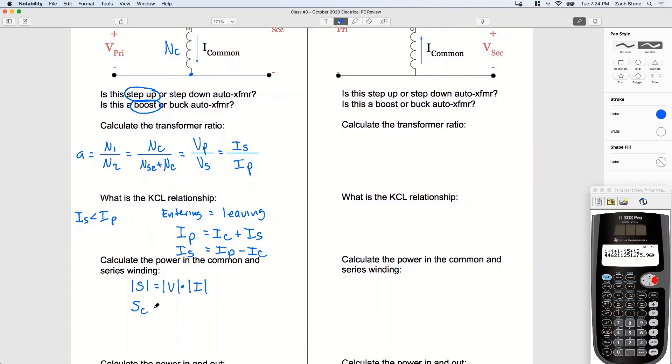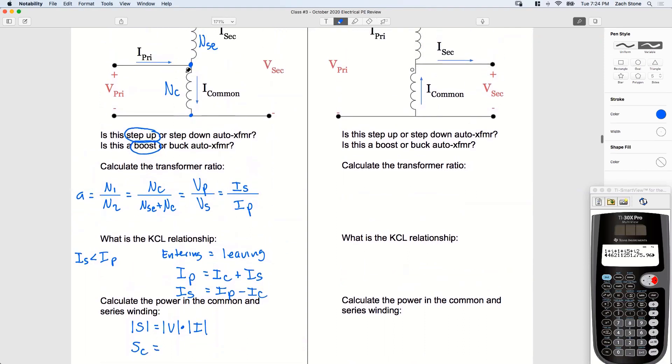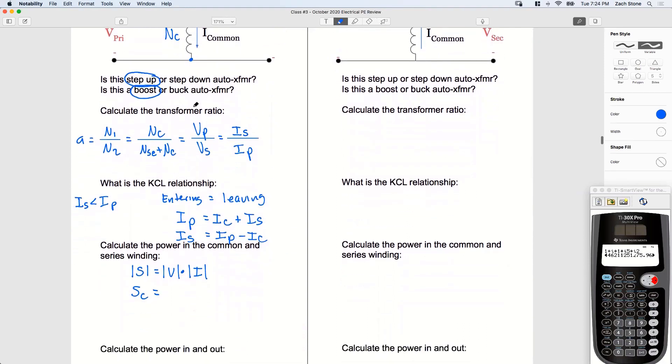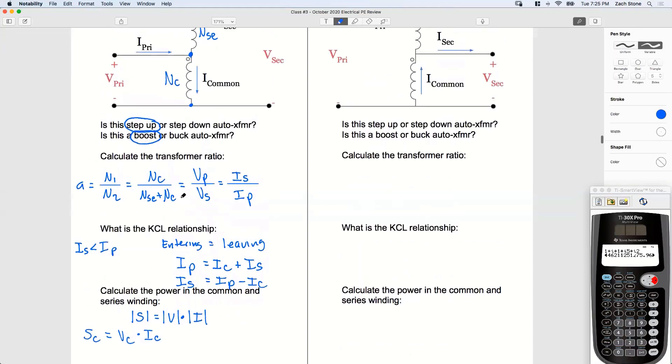So if I want to know SC, the power of my common winding, what's the voltage across the common winding? Let's just call it VC and then we'll expand on that. Let's call it VC and let's call this IC. And I'm just going to move this over to the left so we have space for the series winding. All right, we know what IC is. The current flowing through the common winding is the common current IC.